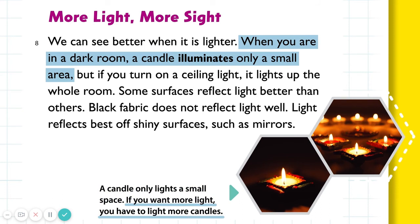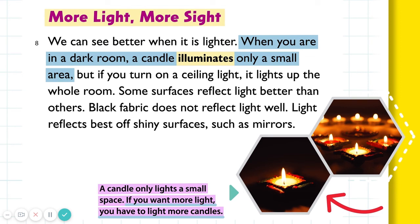So this section uses headings, boldface words, photos, and captions. In an informational text, we might also see diagrams, graphs or tables, maybe maps. These are all features that help give more information.